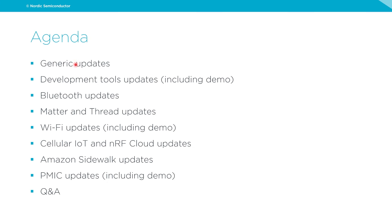The agenda for today: we'll start with some more generic updates on the SDK. Then we'll move on to development tools, including a demo of the new features in the Device Tree Visual Editor. Then we'll continue with updates on Bluetooth, Matter, and Thread, then Wi-Fi with a demo, Cellular IoT, NRF Cloud, Amazon Sidewalk, and PMIC updates with a demo, before moving into Q&A.